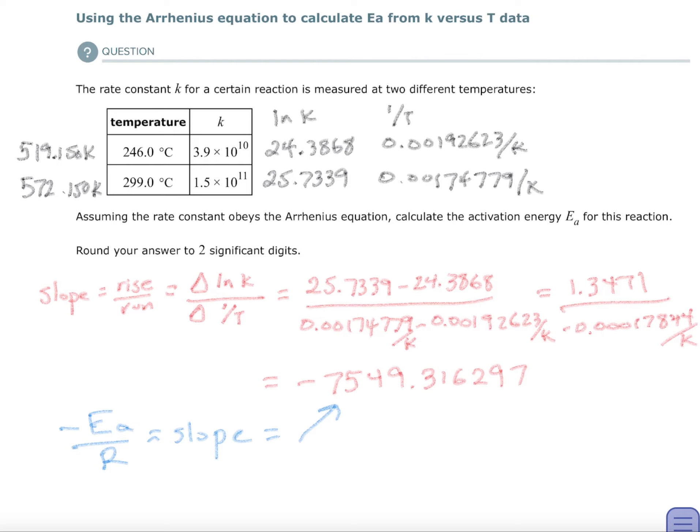Then on the bottom, I have the one over the temperatures. So I have the second temperature minus the first one over each of those. And I have its number. Divide them. And that's my slope. And I'm going to set that slope equal to negative Ea over R.